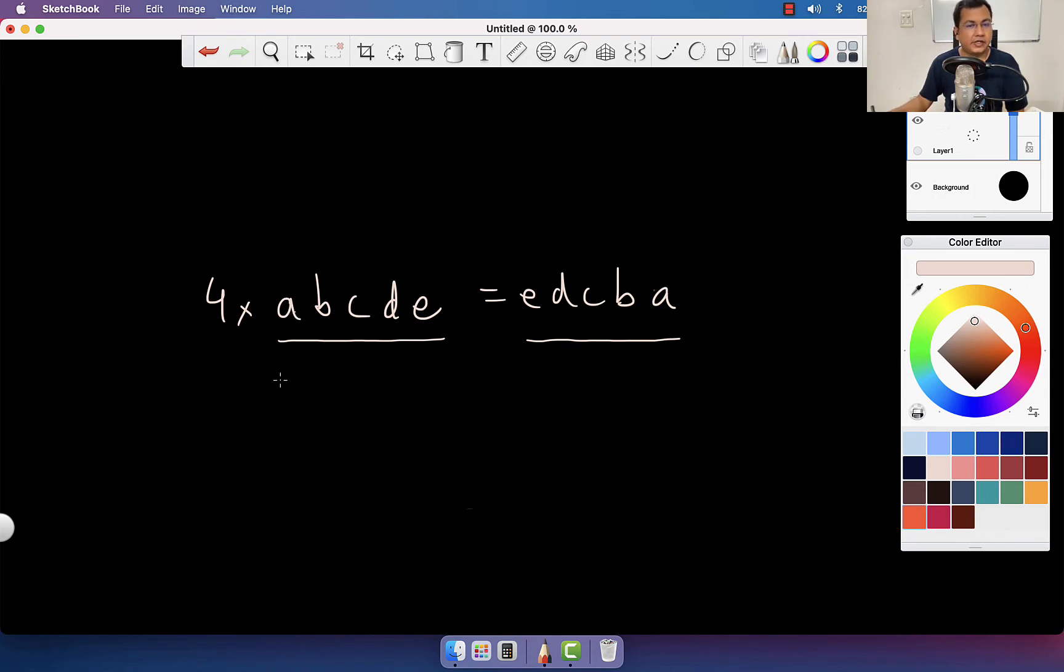Same logic: a cannot be more than 3 because if you have 30,000 multiply by 4 you get 120,000, which is six digits, not a five-digit number. So a has to be either 1 or 2, but this is even, so this has to be even. This means a has to be 2.